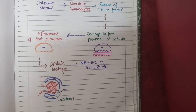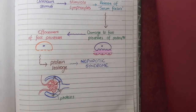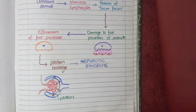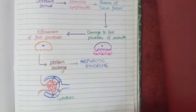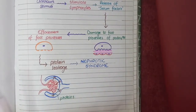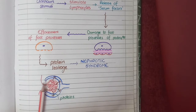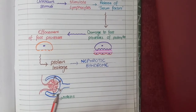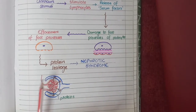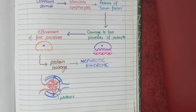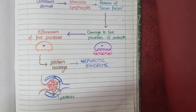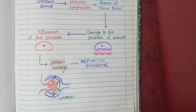Normally, the function of foot processes of podocytes is to provide attachment to a negatively charged protein, nephrin, which prevents plasma proteins from filtering into the urine. But since the podocytes are damaged, proteins start filtering into the urine. This proteinuria leads to hypoproteinemia, causing fluid to shift from blood vessels into the interstitial compartment, producing edema. Additionally, loss of proteins that inhibit LDL synthesis results in hyperlipidemia.